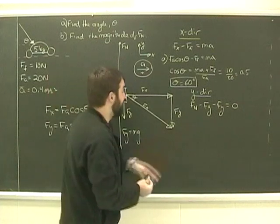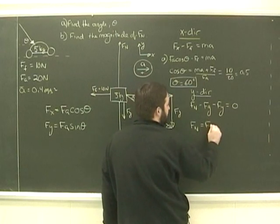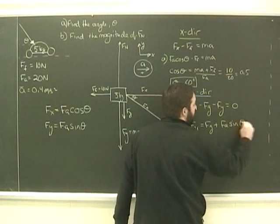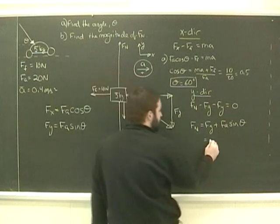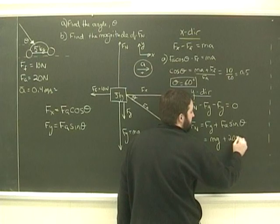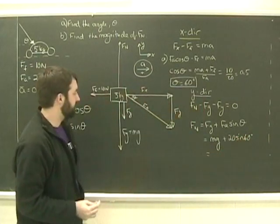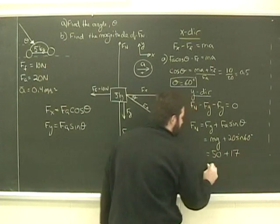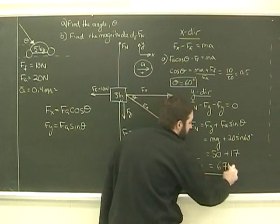Alright, we're back. You've hopefully gotten the right answer. You can rearrange this to say that fn equals fg plus fy, but fy is fa sine theta. We know sine of theta. 20 sine of theta will be 17, so we've got mg, I should write, plus 20 sine of 60. What's mg? mg is about 50, 20 sine of 60 is 17, therefore, the magnitude of the normal force is about 67 newtons.